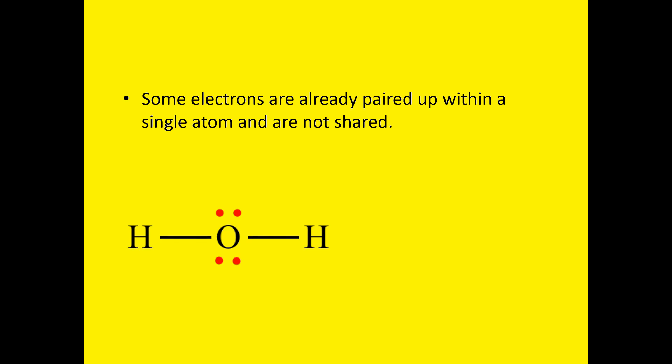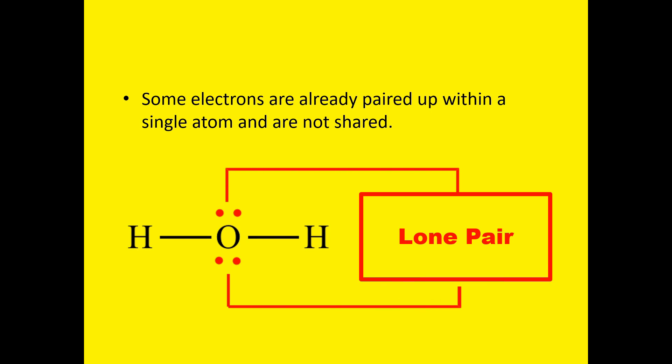Because some electrons are already paired up within a single atom, they are not shared. These are what we call electron pairs. These electron pairs are not used for bonding, but they will affect the shape of our molecule.